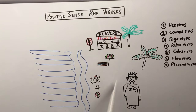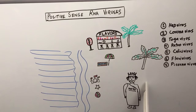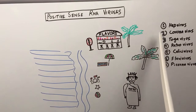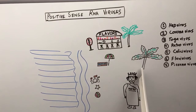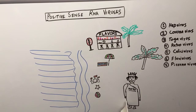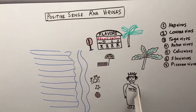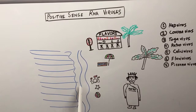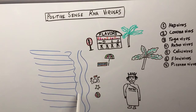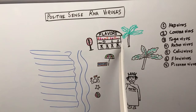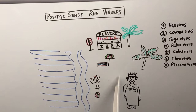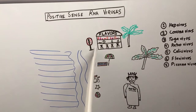Now let's decode the mnemonic. The happy man depicts Hep virus. He wore his crown — Coronavirus. He wore his toga — Togavirus. He had a complete retro look — Retrovirus. He went to the California seashore — Calicivirus.